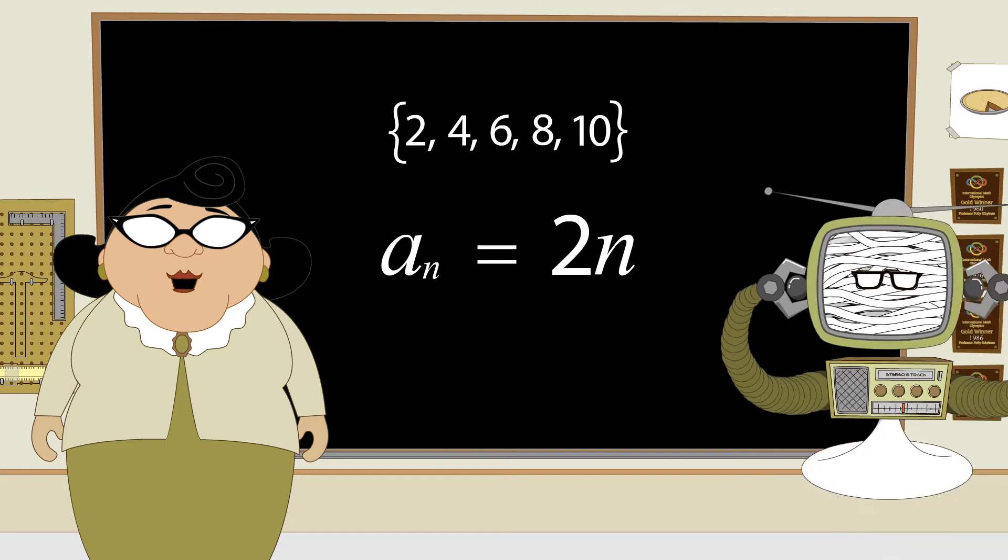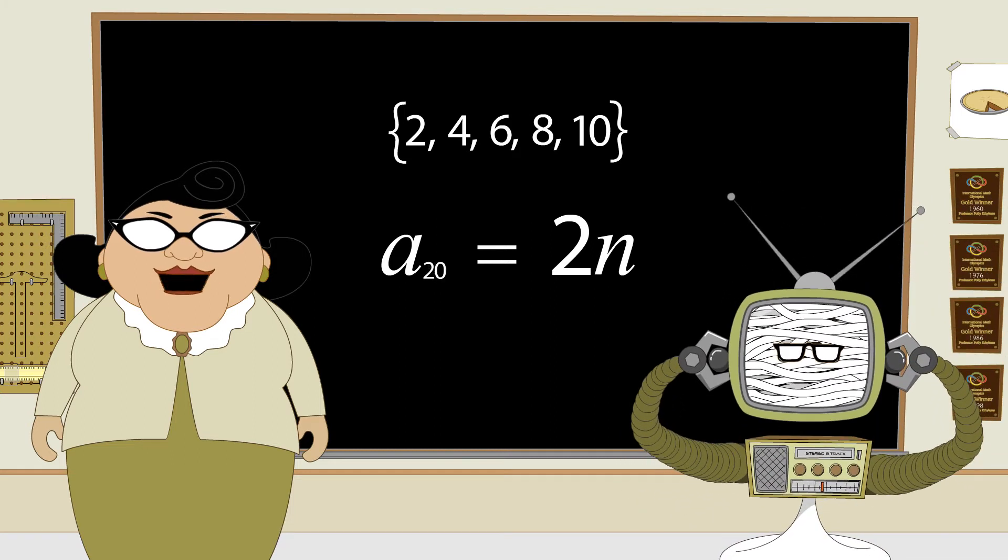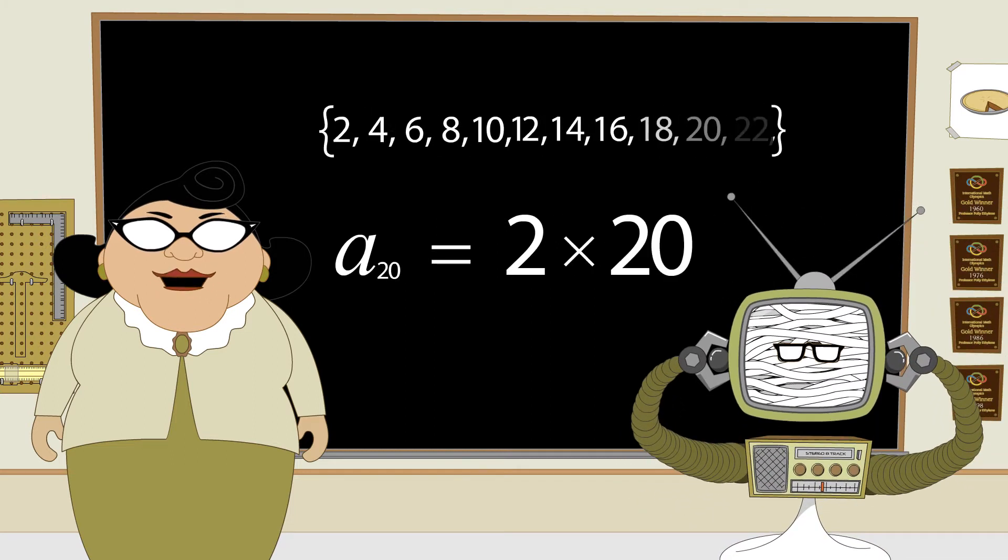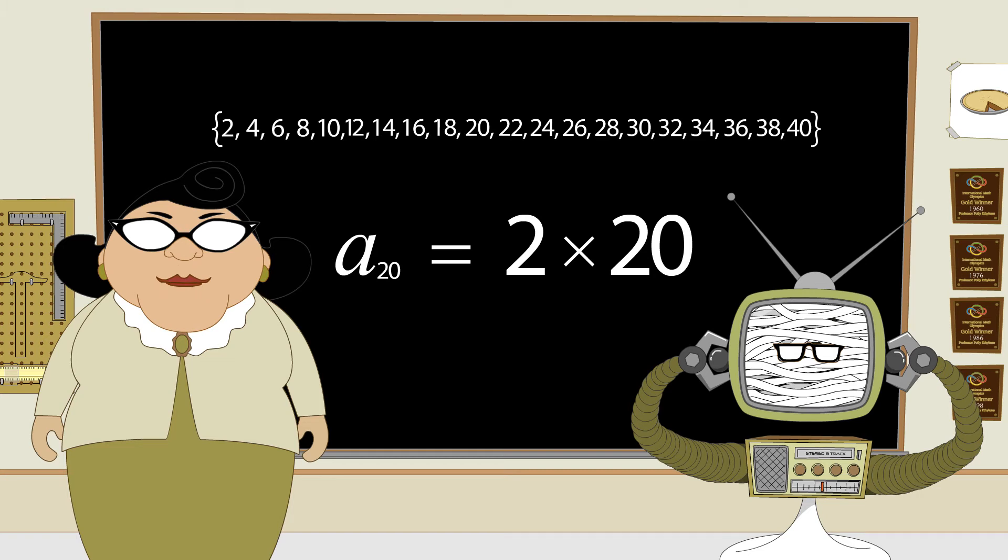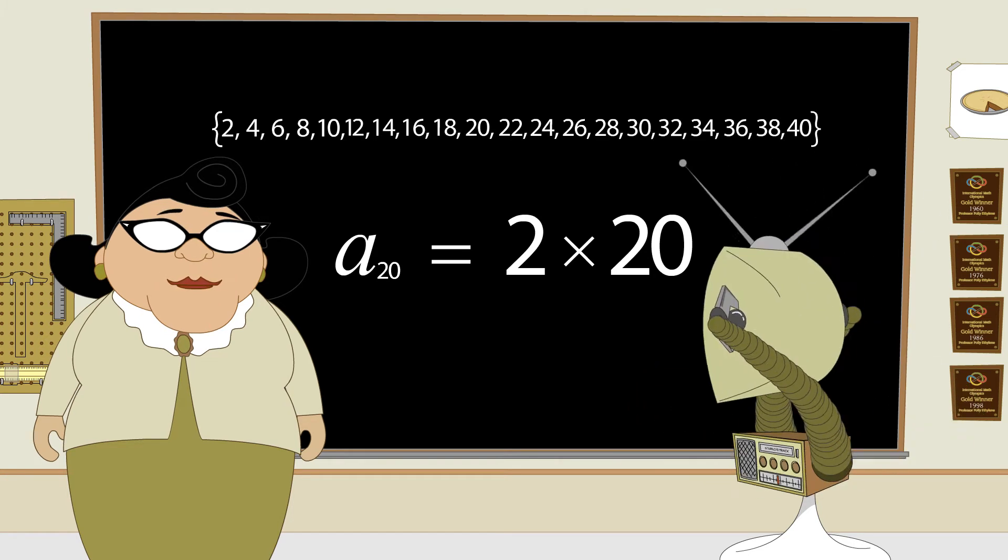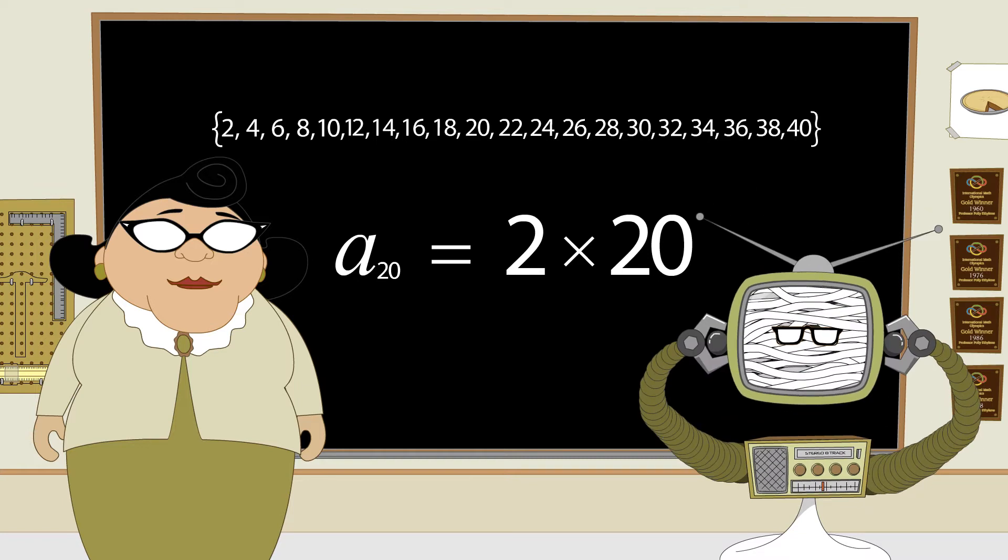So, for instance, the 20th term, a sub 20, is just 2 times 20, or 40. Now, isn't that easier than listing every term?